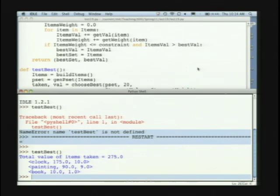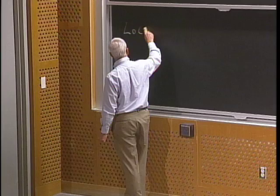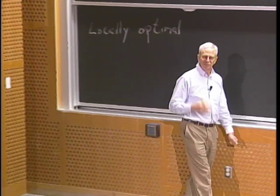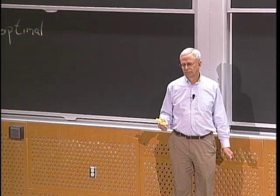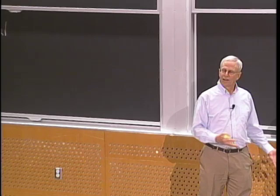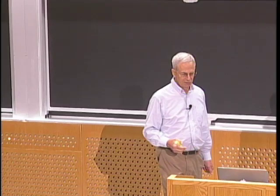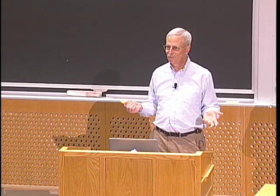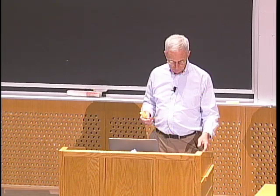Why does it find a better answer? Because the greedy algorithm chose something that was locally optimal at each step, but there was no guarantee that a sequence of locally optimal decisions would reach a global optimum. What this algorithm does is find a global optimum by looking at all solutions. And that's something we'll see again and again — there's always a temptation to do things one step at a time, finding local optima, because it's fast and easy, but there's no guarantee it will work well.